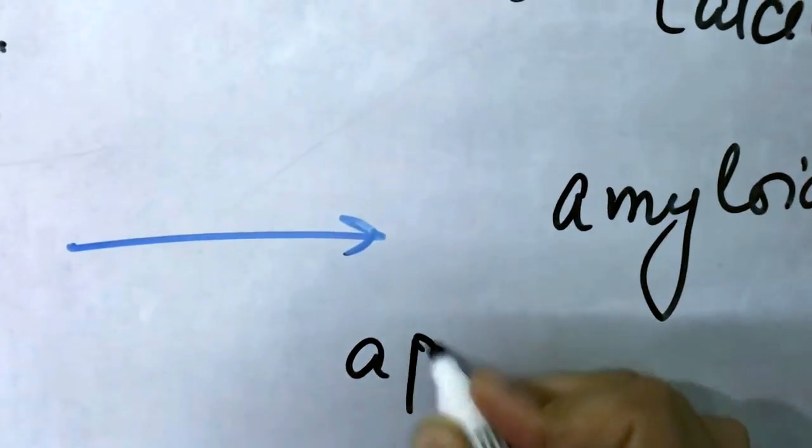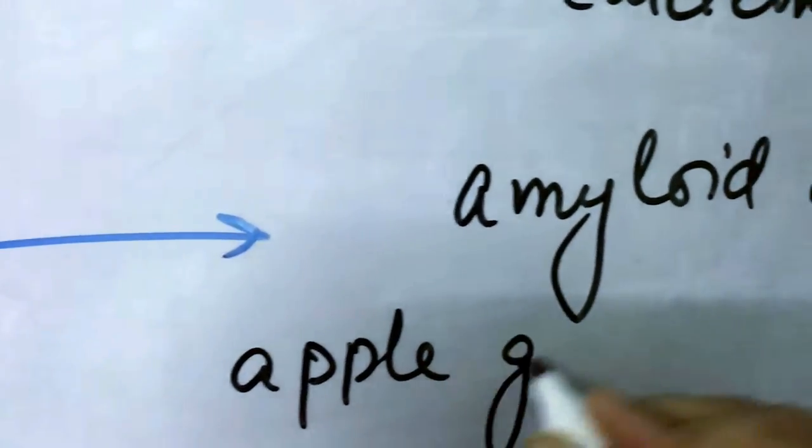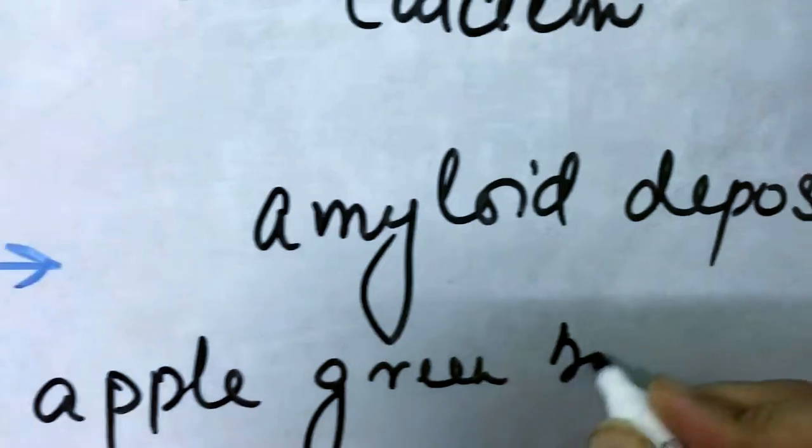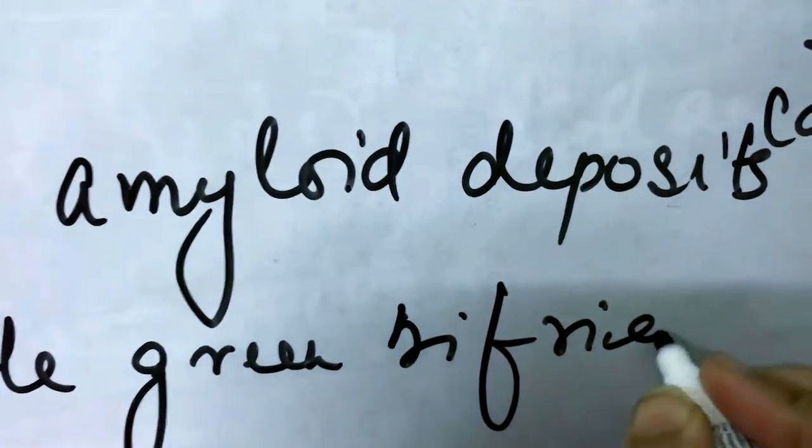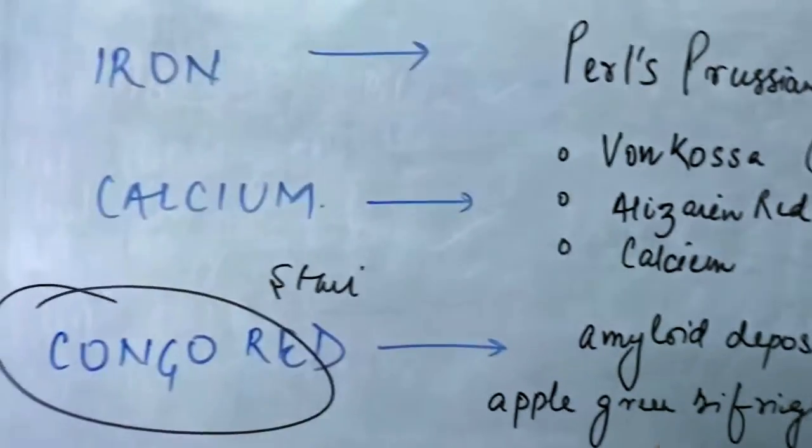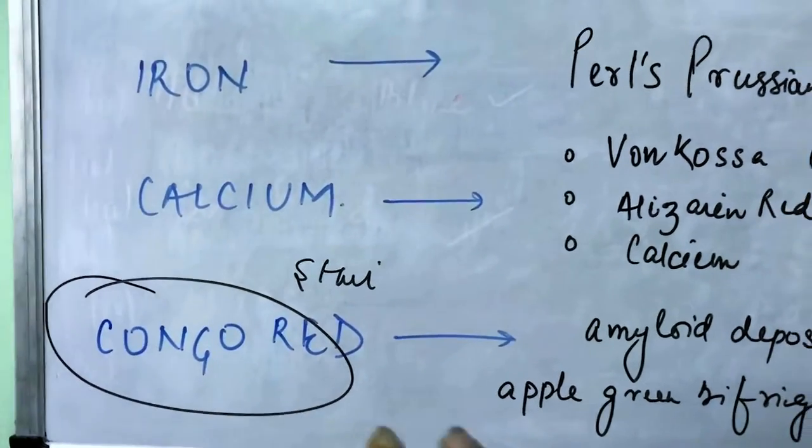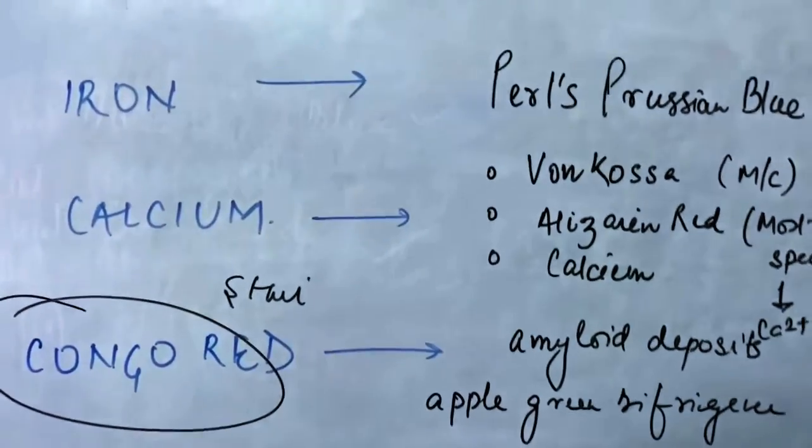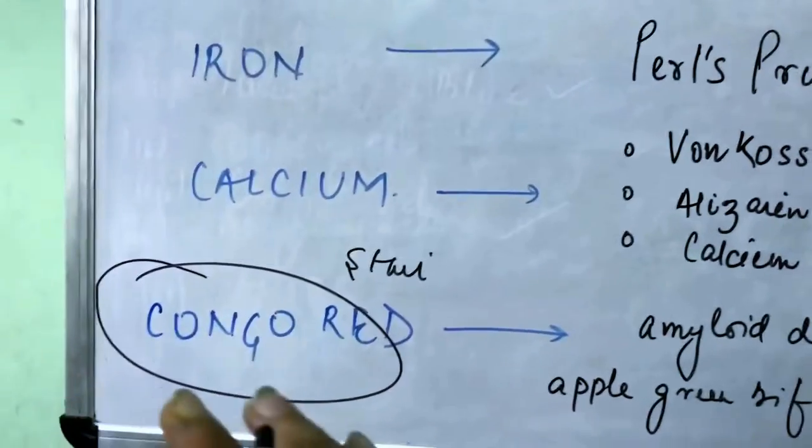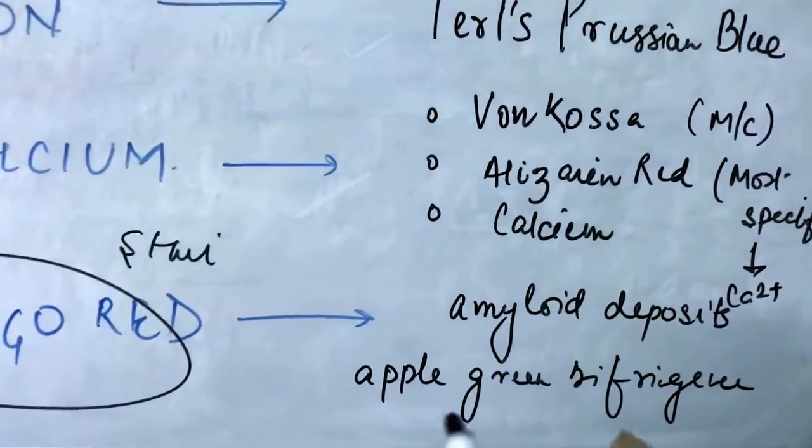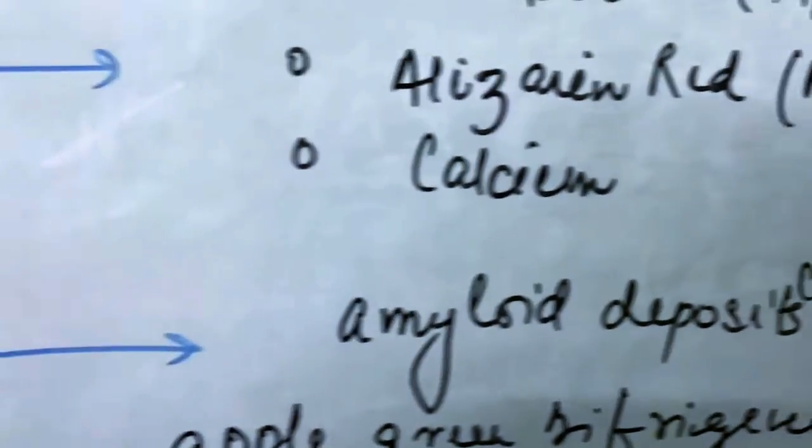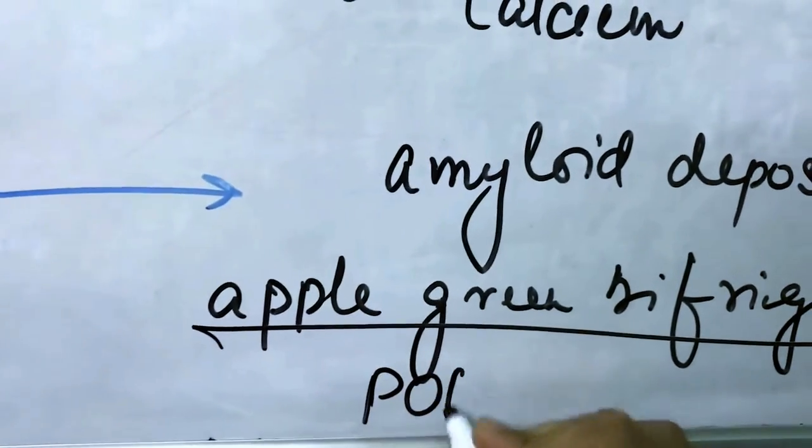And amyloid deposits characteristically have an apple green birefringence in polarized microscopy when they're stained with Congo red. This has been a question which has been asked multiple times: when amyloid deposits are stained with Congo red, they demonstrate something known as apple green birefringence under polarized microscopy.